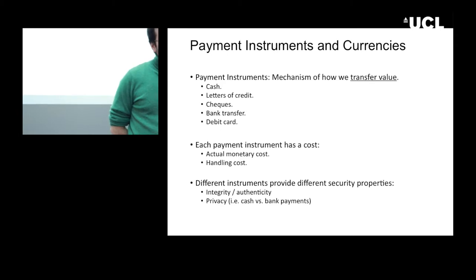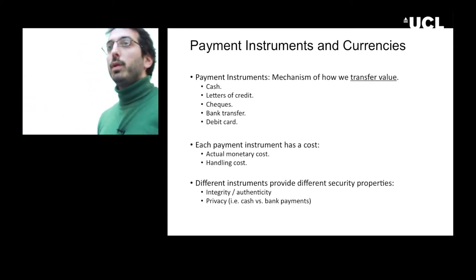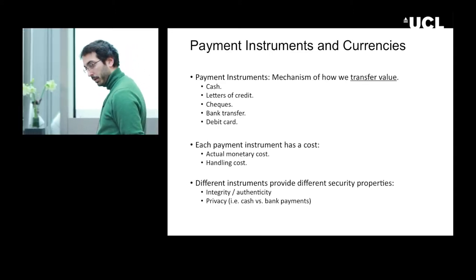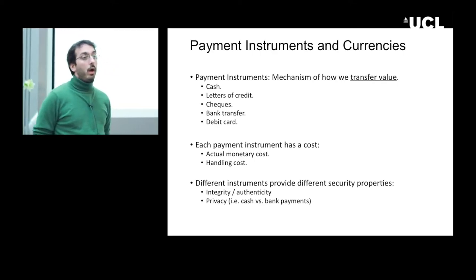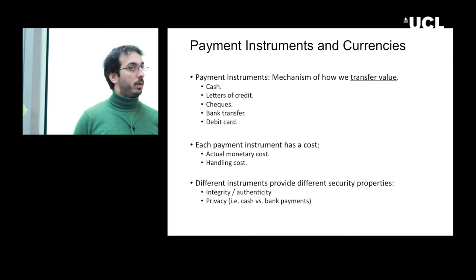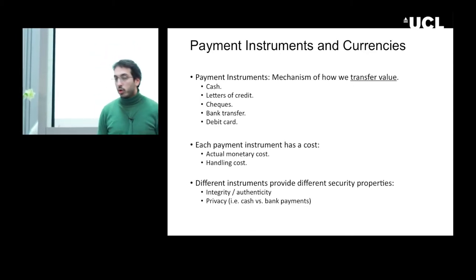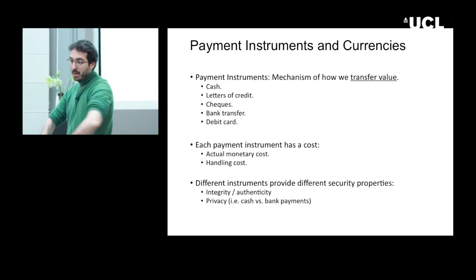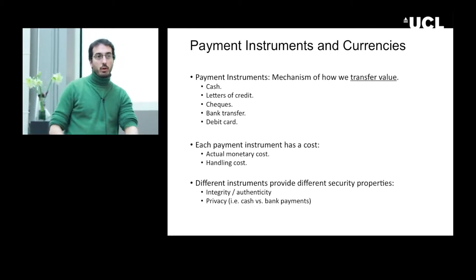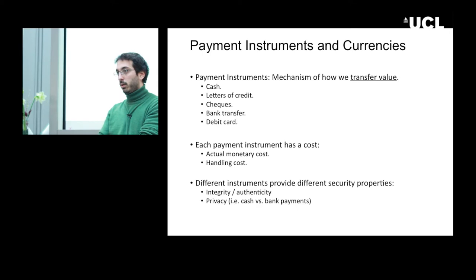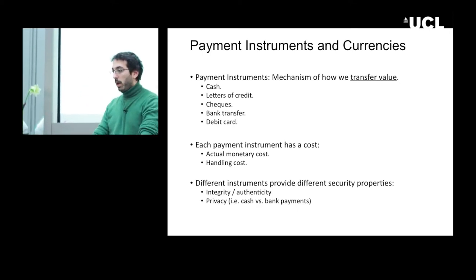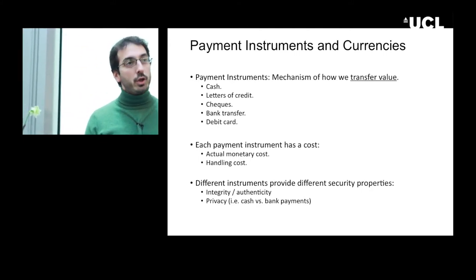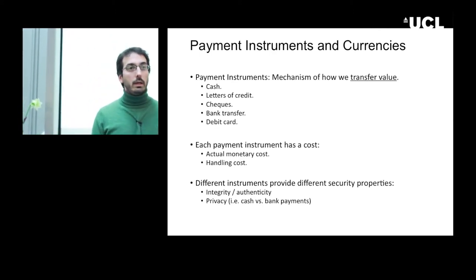Very often when one thinks about a currency, they mix it up with what is instead a payment instrument. These are very different and distinct things. Steven spent a whole lecture earlier today talking about payment instruments — how do we actually transfer value from one account to another? Cash is one way: I can open my wallet and give you some Euros. Traditional Venetian and Florentine ways were letters of credit, which is how the Medici family made its fortune in the late Middle Ages and early Renaissance.